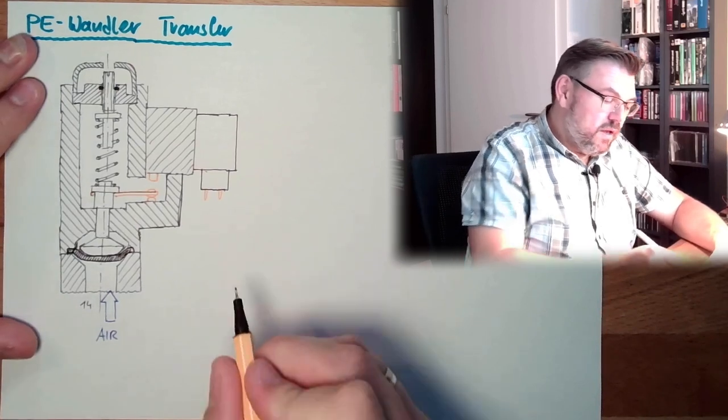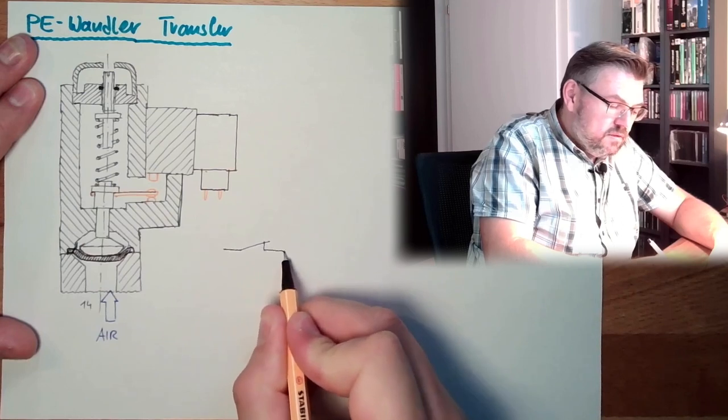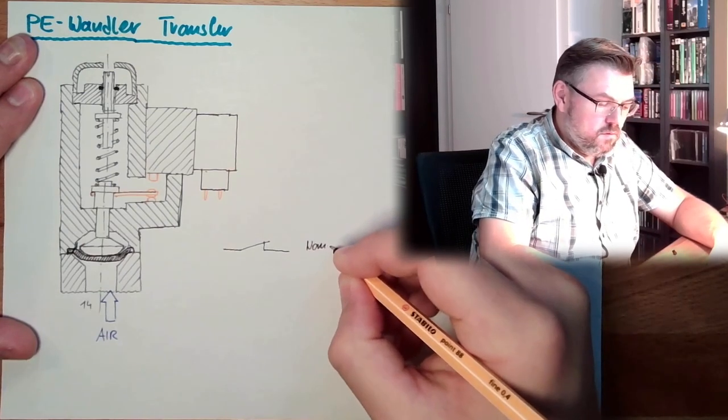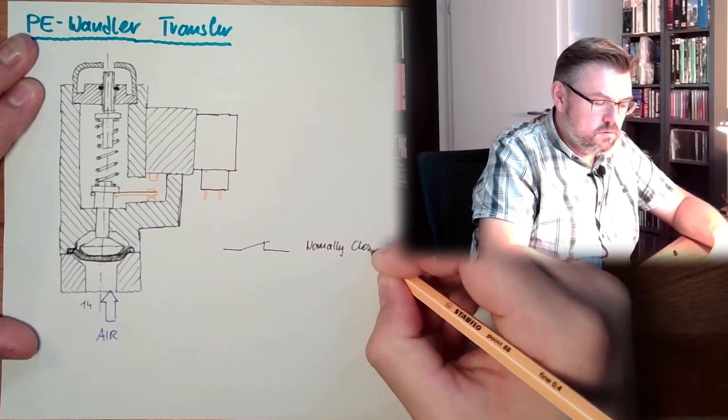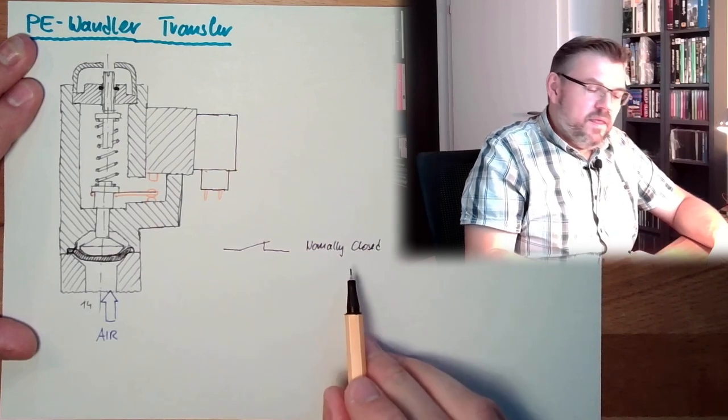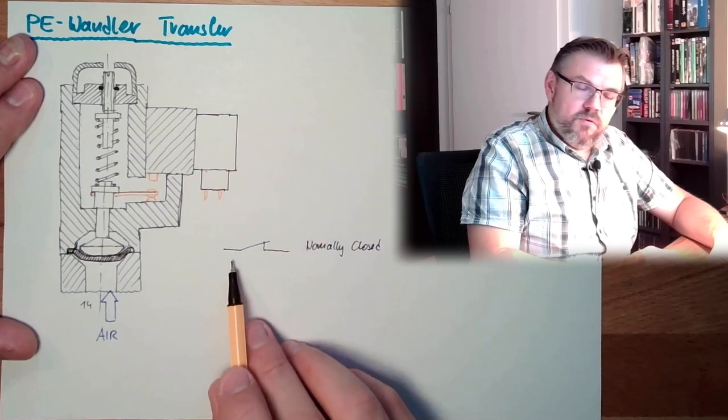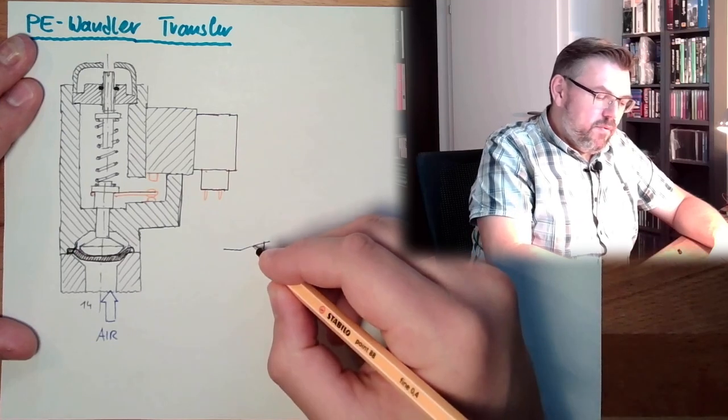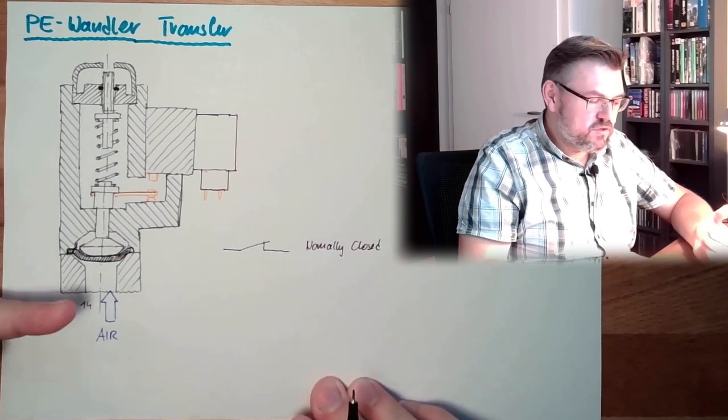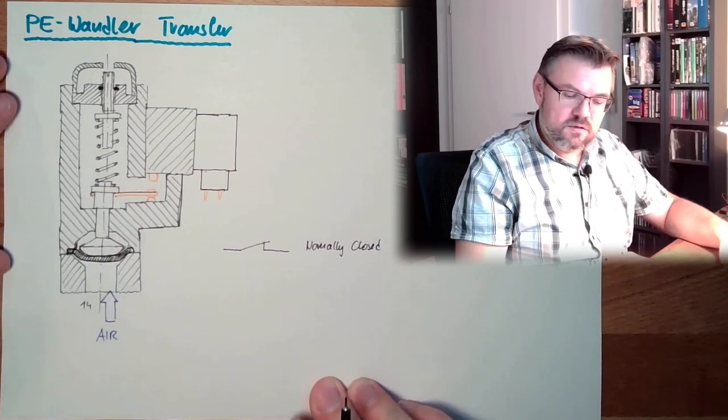So this means, looking like this, normally closed, between those. In German, it's called Öffner. And this is the non-operated position. And if we operate, we will open it. So whenever there is no pressure, we have a signal. Whenever there is pressure, we have no signal, okay?